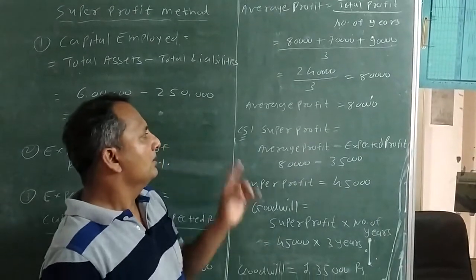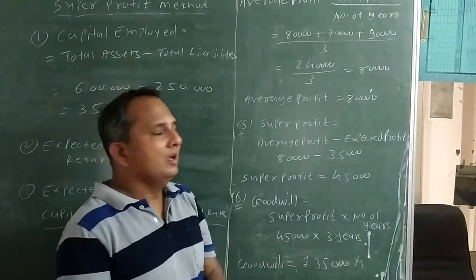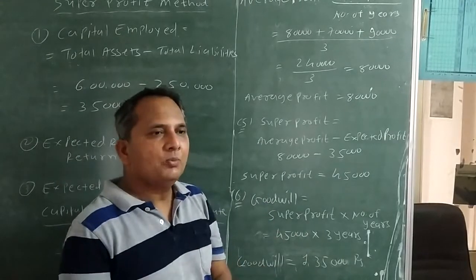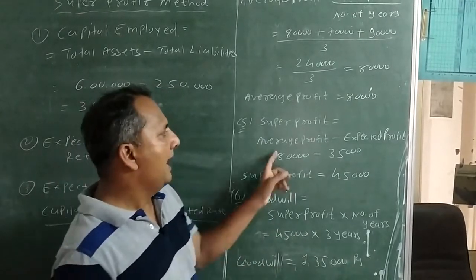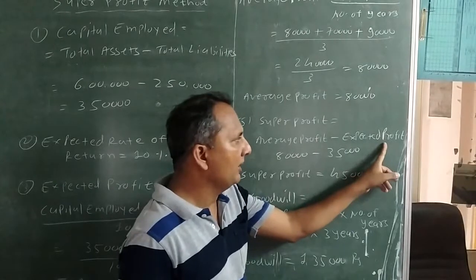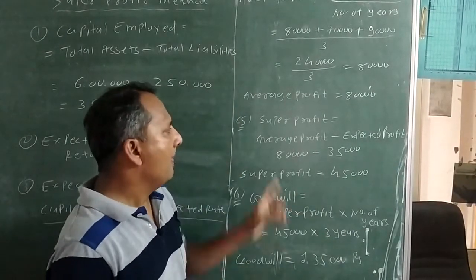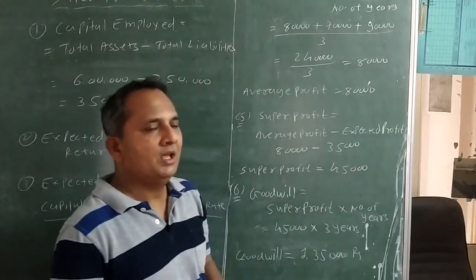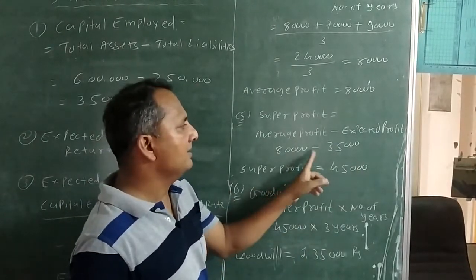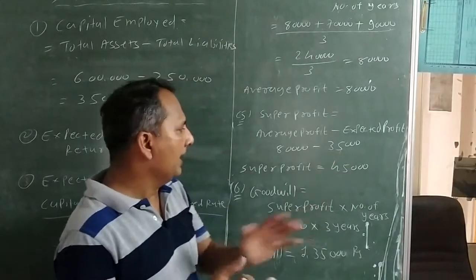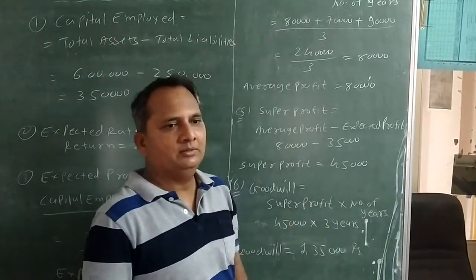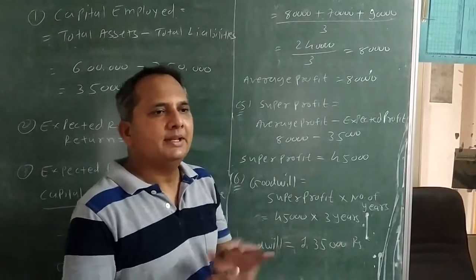Now step 5, we are going to find out super profit. Formula of super profit is average profit minus expected profit. Here expected profit is 35,000. 80,000 minus 35,000 you can get super profit is equal to 45,000.